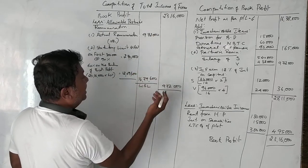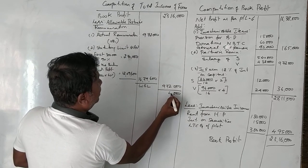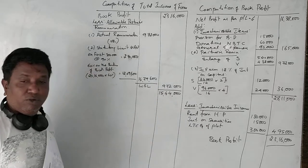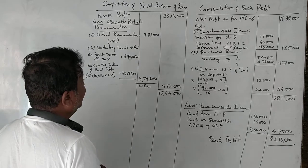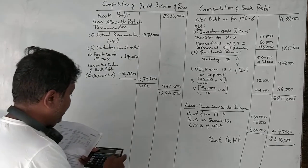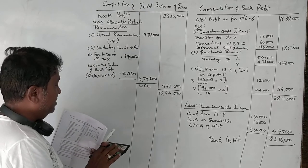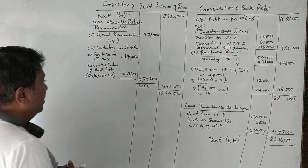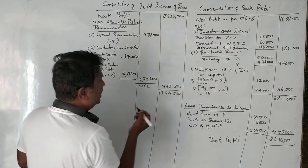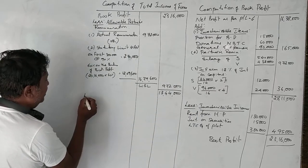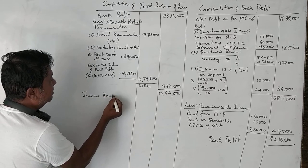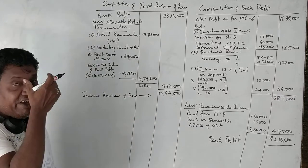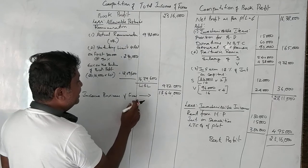Deducting allowable remuneration of ₹9,72,000 from book profit of ₹23,16,000 gives ₹13,44,000 as income from business of the firm. This is the first head of income.